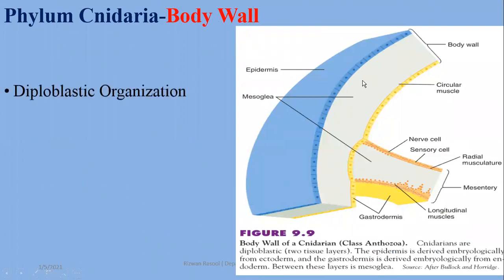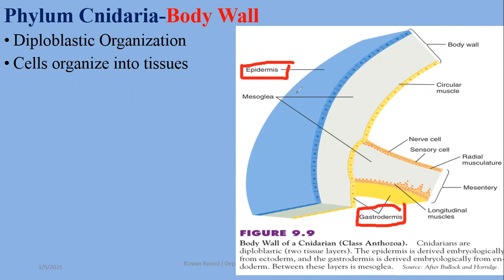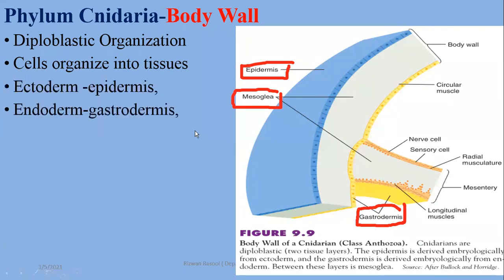As far as the body wall is concerned, Cnidarians have a diploblastic organization — that is, there are two layers. The ectoderm, which develops into the epidermis, and the endoderm, which is modified to form the gastrodermis. The gastrodermis is the inner layer and the outer layer is the epidermis. In the middle of these two layers is a jelly-like material called mesoglea. Mesoglea is non-cellular; if there are cells in it, they will be either ectodermal or endodermal.